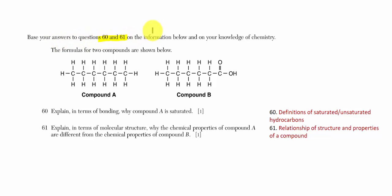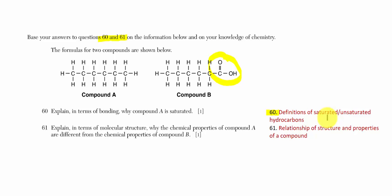For questions 60 and 61, two organic compounds are given, both with six carbons in a string. Compound B has an extra group on the end not seen in compound A. We'll explore the difference between saturated and unsaturated hydrocarbons and the relationship between structure and properties.